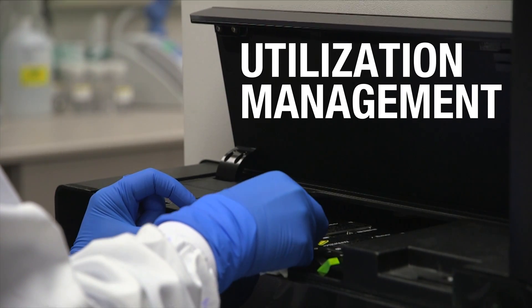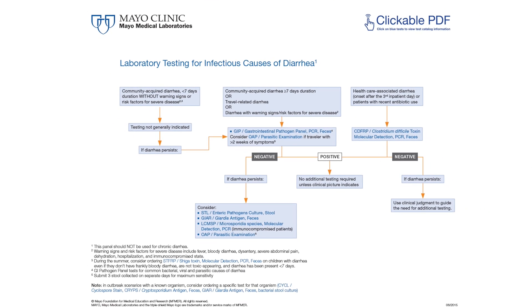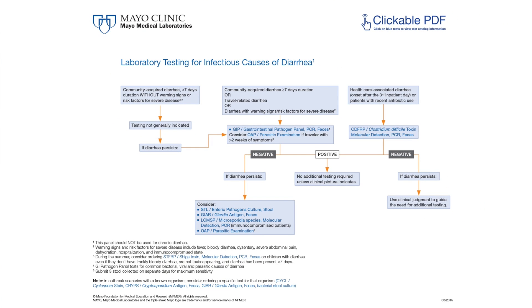We've come up with guidelines for laboratory testing for infectious causes of diarrhea, which can be found on the Mayo Medical Laboratories website. It guides clinicians through test ordering, including when to order the gastrointestinal pathogen panel and when to order other tests — such as Clostridium difficile testing. We want people to have guidance as to when testing would be appropriate, when it would not be appropriate, and when alternative testing would be appropriate.